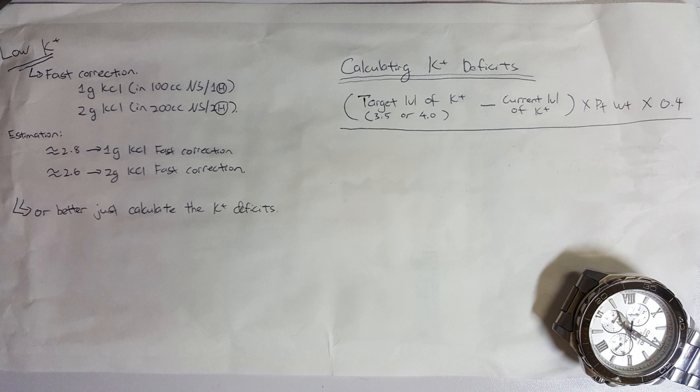Take that value and divide it by 13.4, because 1 gram of KCL will give us 13.4 mmol of potassium. And that will give us the number of grams of KCL that the patient needs.